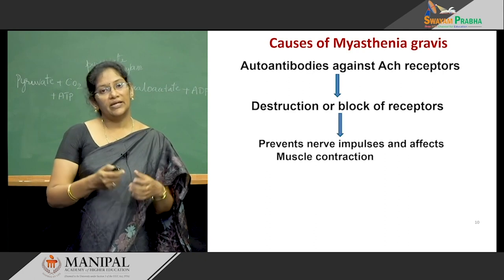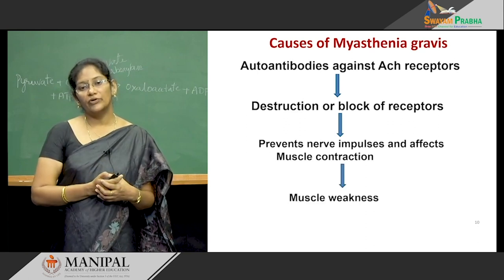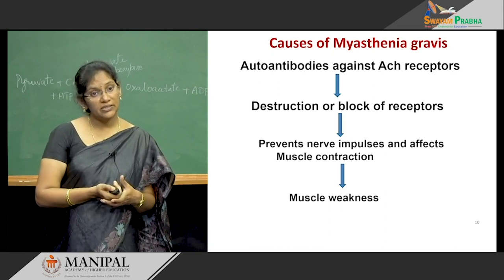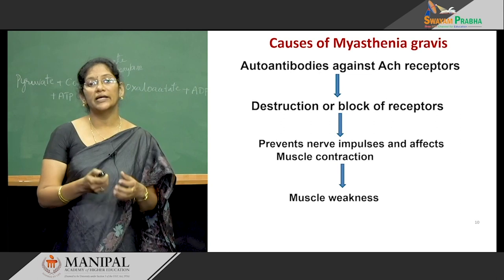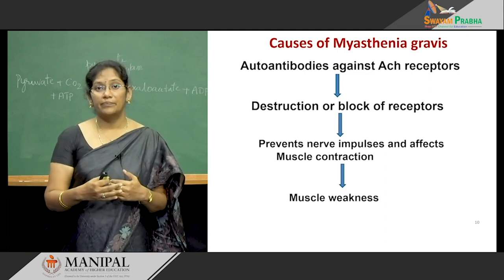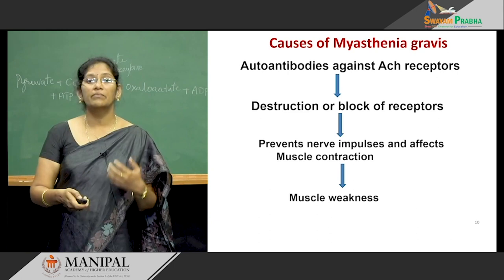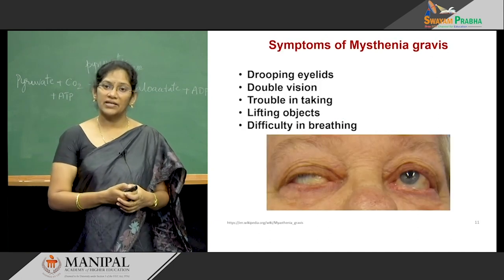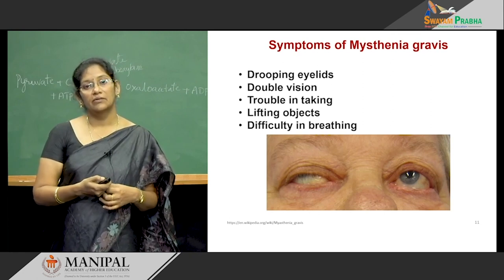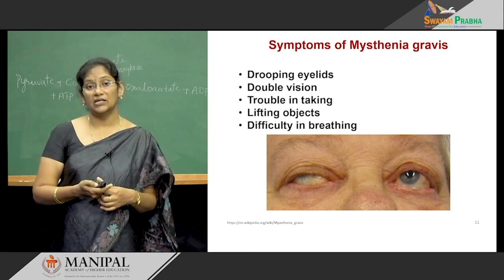Because of the auto-antibodies, they are mainly preventing the nerve impulses and affecting the muscle contraction, which is why we mainly observe muscle weakness. The main cause is that auto-antibodies against the acetylcholine receptors are produced, destructing or blocking the acetylcholine receptors and preventing nerve impulse transmission from the nerves to the muscle. The symptoms mainly observed include drooping of the eyelids, double vision, trouble in talking, difficulty lifting objects, and also difficulty in breathing.